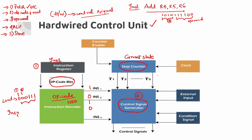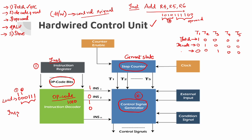How do we represent step count? We use 5 bits: T1, T2, T3, T4, T5. For example, T1 is represented as 1,0,0,0,0; T2 is 0,1,0,0,0; T3 is 0,0,1,0,0 - and so on. So T1 is 1 in the T1 position, T2 is 1 in the T2 position, T3 is 1 in the T3 position - this is the operand read state.